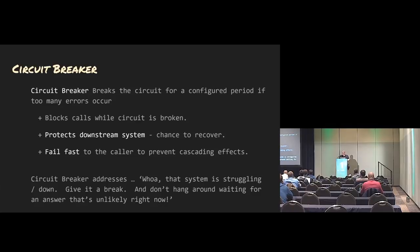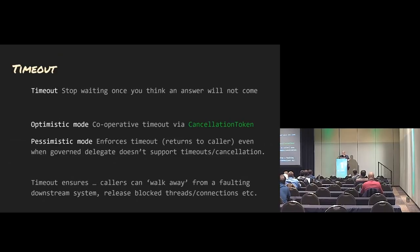The original circuit breaker's trigger to break was too many exceptions in a row. In an advanced circuit breaker, the trigger is too high a proportion of failures. So you can specify which one you want to use. The timeout — and of course we can combine these things — stop waiting once you think an answer won't come. You have an optimistic mode which gives you a cancellation token, and pessimistic enforces the timeout even when the delegate doesn't support it.